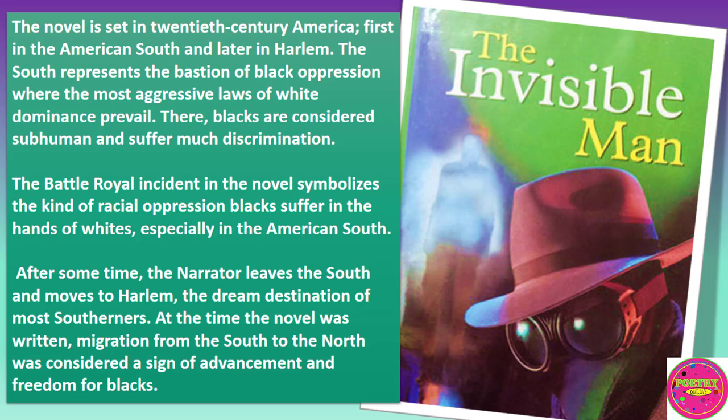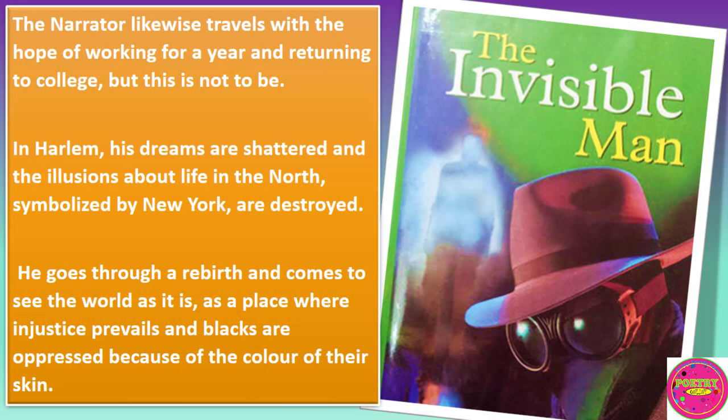After some time, the narrator leaves the South and moves to Harlem, the dream destination of most Southerners. At the time the novel was written, migration from the South to the North was considered a sign of advancement and freedom for blacks. The narrator likewise travels with the hope of working for a year and returning to college, but this is not to be. In Harlem, his dreams are shattered and the illusions about life in the North, symbolized by New York, are destroyed. He goes through a rebirth and comes to see the world as a place where injustice prevails and blacks are oppressed because of the color of their skin.